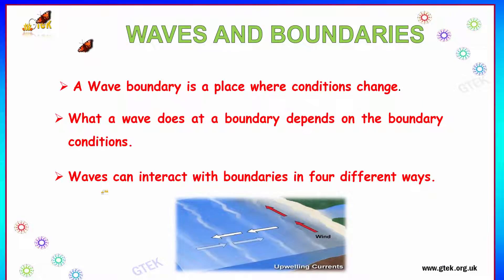Now, let's see about waves and boundaries. A wave boundary is a place where conditions change. What a wave does at a boundary depends on the boundary conditions. It's nothing but a wave tends to interact with the boundaries in four different ways.